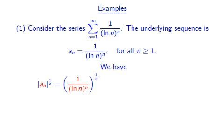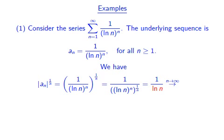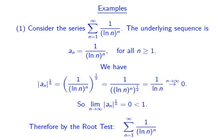We bring the power 1/n inside the fraction. Then n and 1/n cancel each other out and we are left with 1/ln(n). As n goes to infinity, ln(n) also goes to infinity, and thus 1/ln(n) tends towards 0. That means |a_n|^(1/n) has limit 0. Since 0 is less than 1, the root test tells us that our series converges.